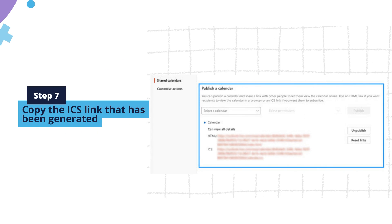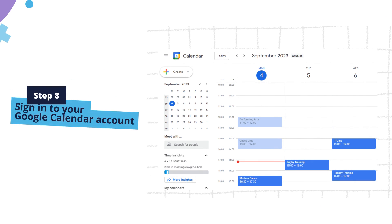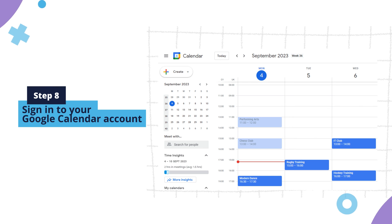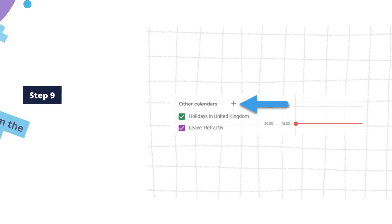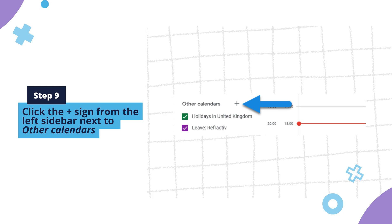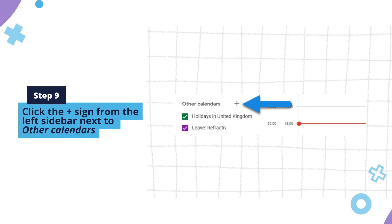Step 7: Copy the ICS link that has been generated. Step 8: Sign in to your Google Calendar account. Step 9: Click the plus sign from the left sidebar next to Other Calendars. If you can't see the left sidebar, click on the burger icon — three horizontal lines — from the top left corner to open it.